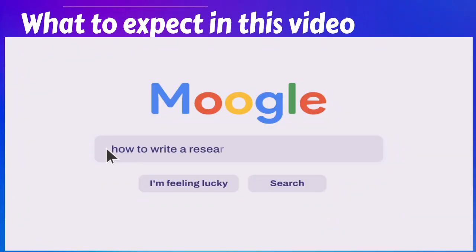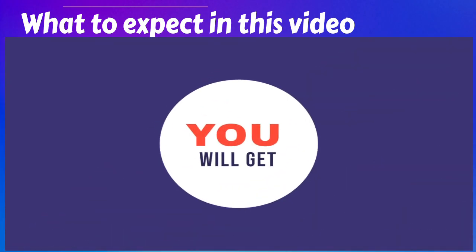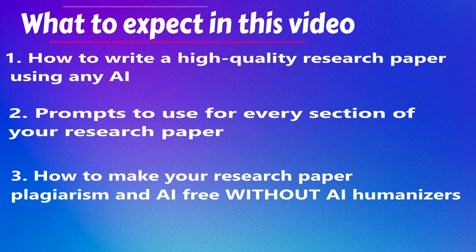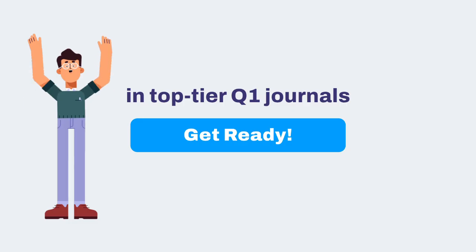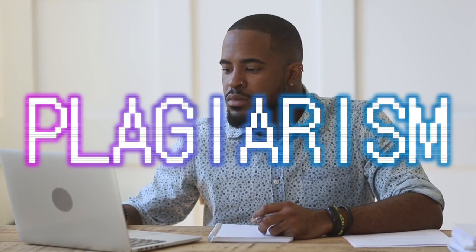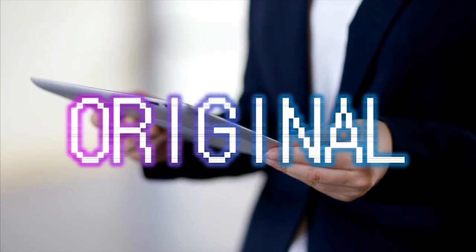In this video, I'll show you how to write a high-quality, fast, and effective research paper the right way, using any AI of your choice. You'll get powerful prompts for every section of your paper, so you can guide your AI to create work that's not just acceptable for college, but potentially publishable in top-tier Q1 journals. This video will be helpful to both beginners and professional writers. If you follow the steps and prompts I will show you, your research paper will be free from AI plagiarism, excellent, systematic, impactful, clear, and even original and rigorous.